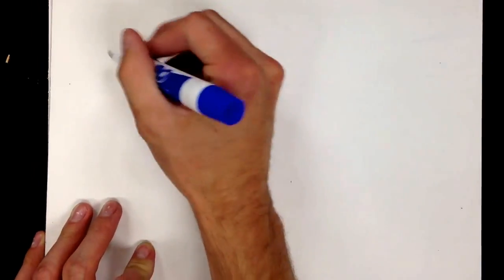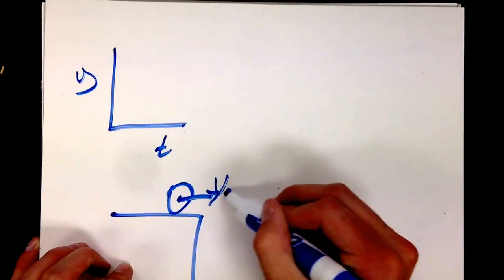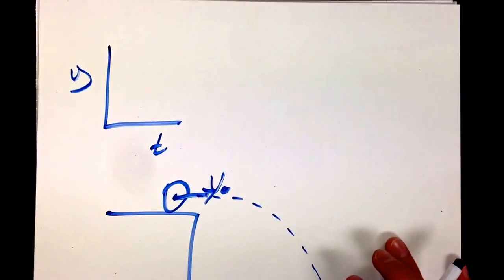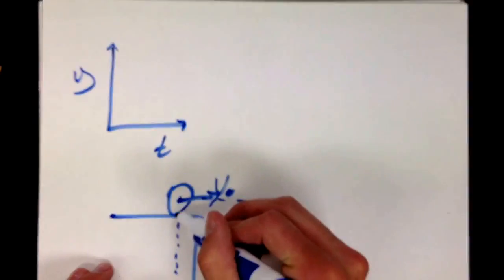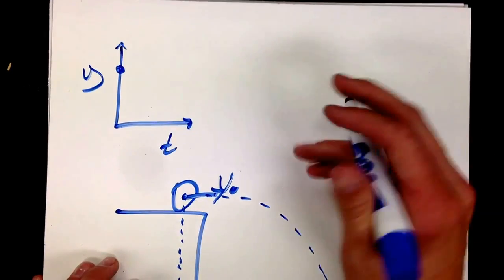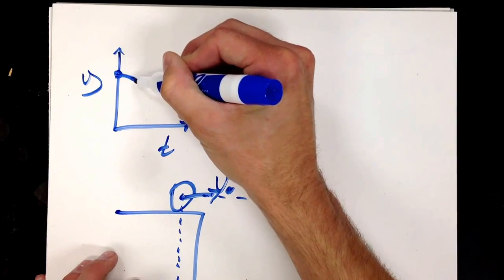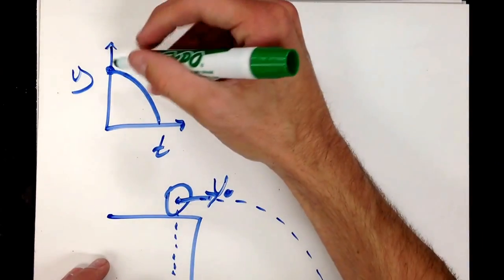Let's talk about the position versus time graphs for a horizontal projectile, starting with y position versus time. This is for the scenario where the ball's initial velocity is only in the x direction and it launches off a flat surface — or is fired horizontally. My object starts at a certain height, so the graph should start at that height. The initial y velocity is zero, so the initial slope is zero, but the y velocity increases, so the slope of the tangent also increases.